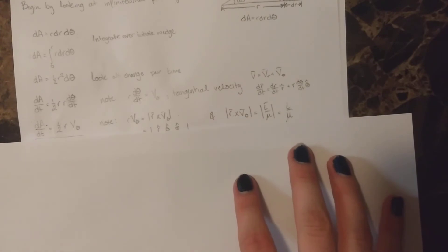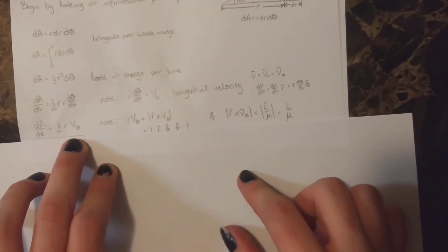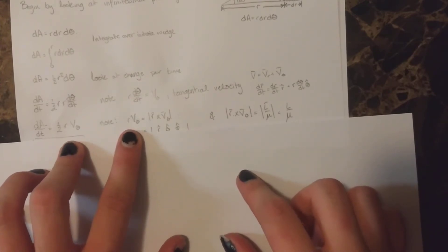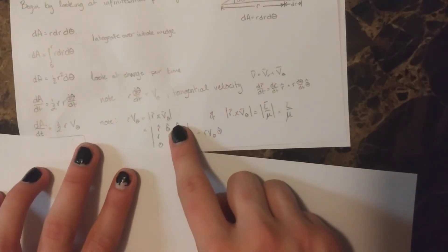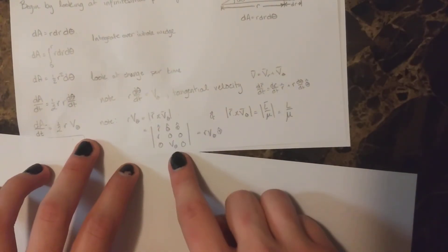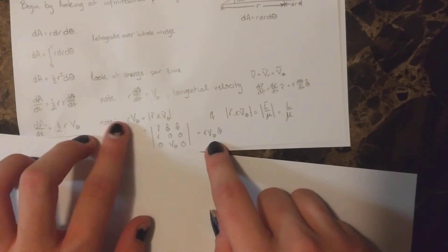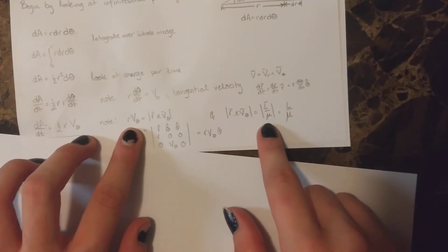So next, we replace the r d theta dt with v theta, and we can see this r v theta, which is the cross product of r v theta. And we can see this cross product here gives us back what we had. And this cross product is also equal to the absolute value of the angular momentum divided by the reduced mass.